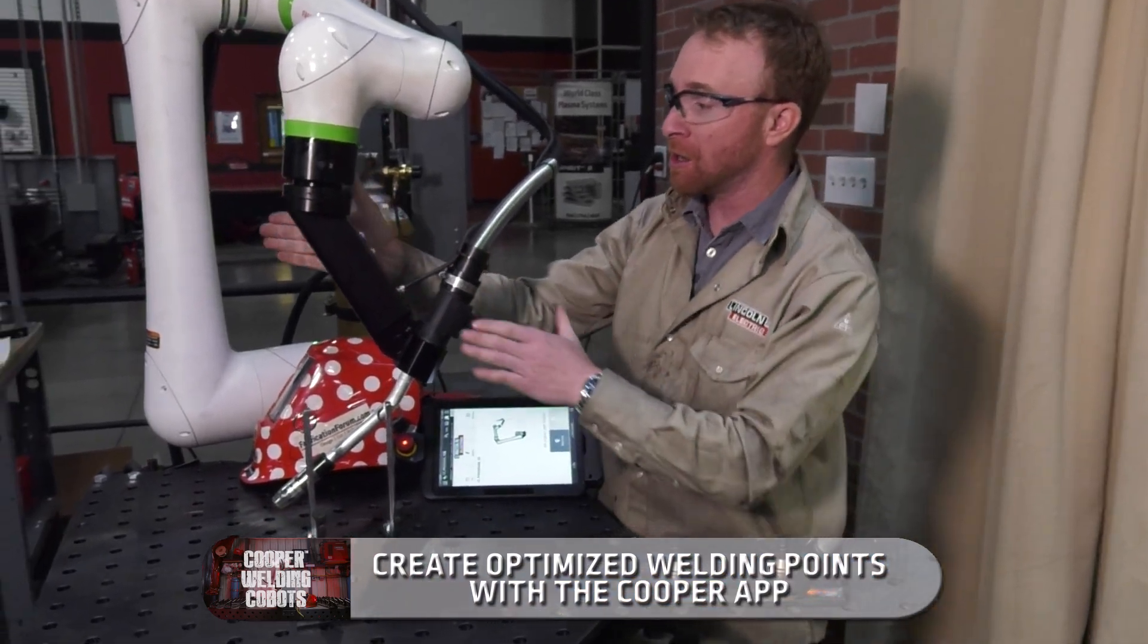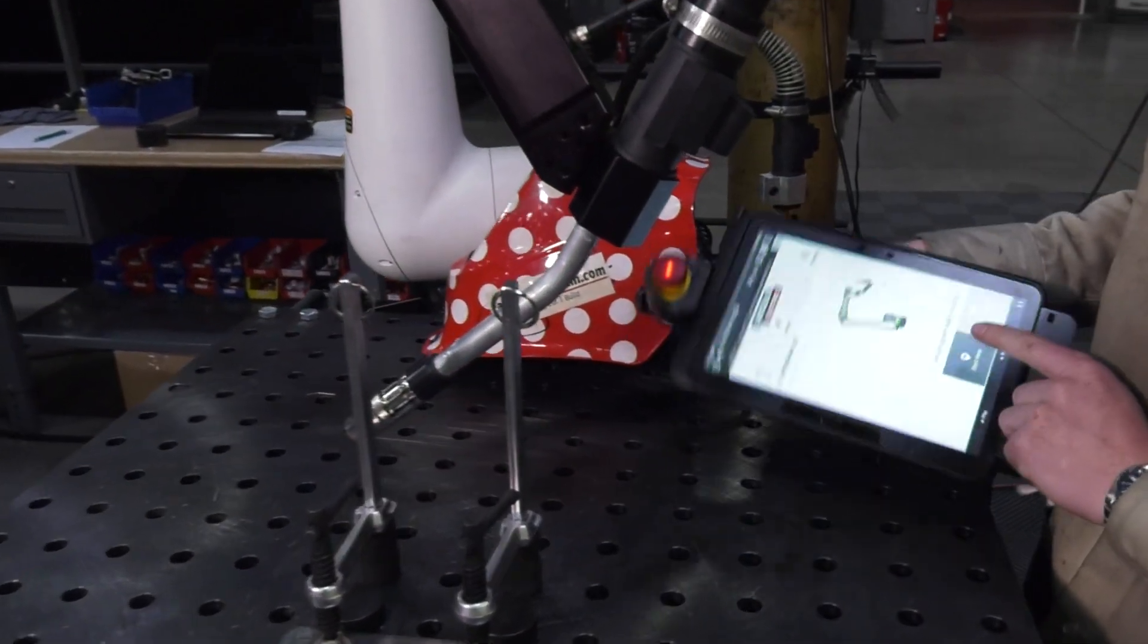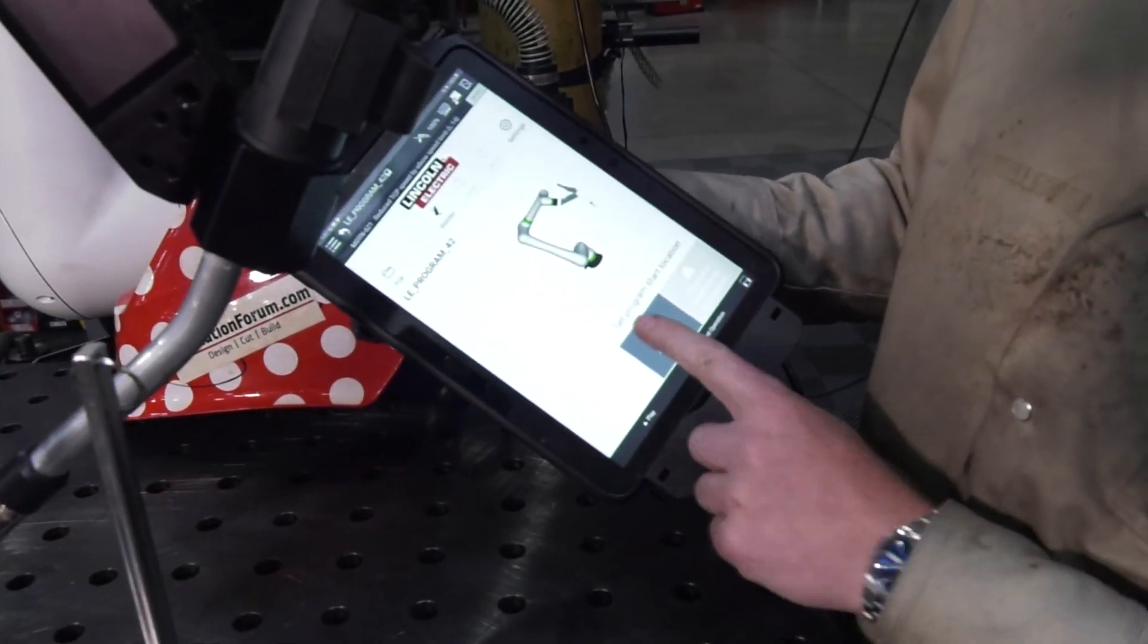So from here, we're going to take the robot arm, and in the app we're going to go ahead and press start here.